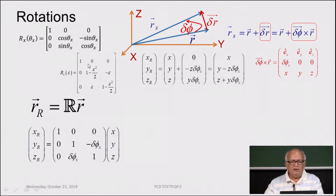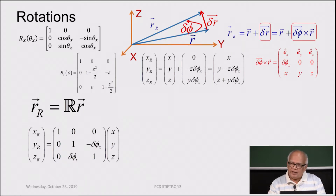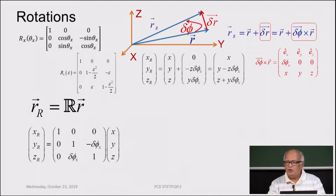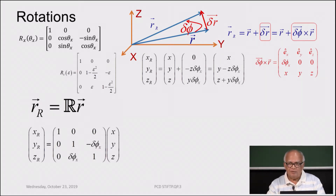To order epsilon squared, if you take cosine θ and sine θ and expand them, retaining terms only up to the quadratic terms, then cosine θ is nearly equal to 1 and sine θ is nearly equal to θ. The next term in sine is θ³, which is smaller than θ², so you ignore it. This is your situation with respect to coordinate transformations.